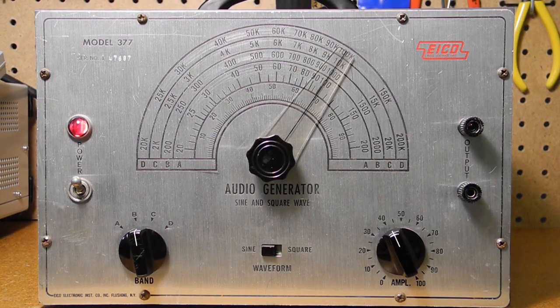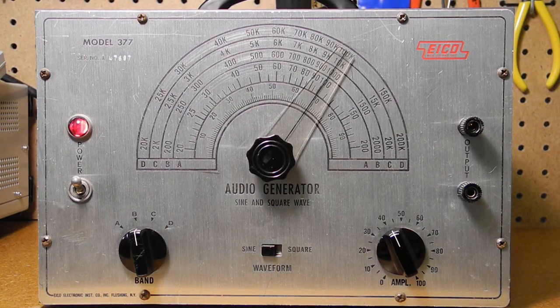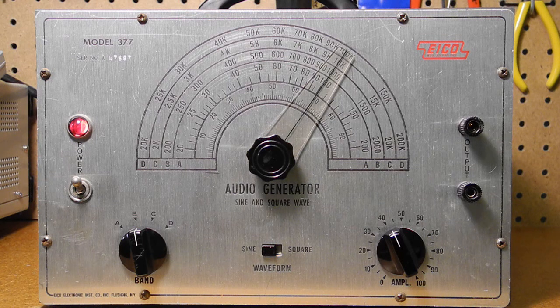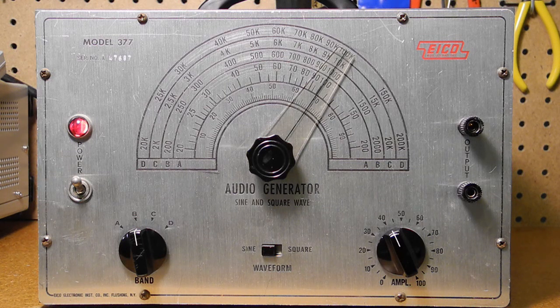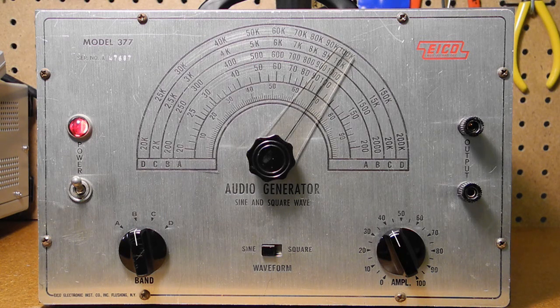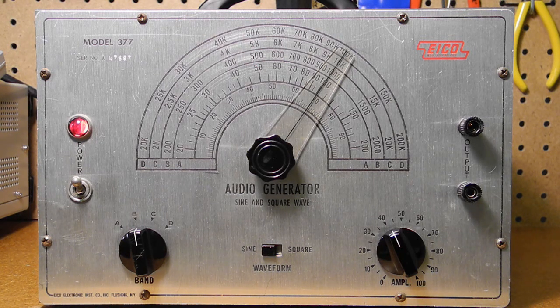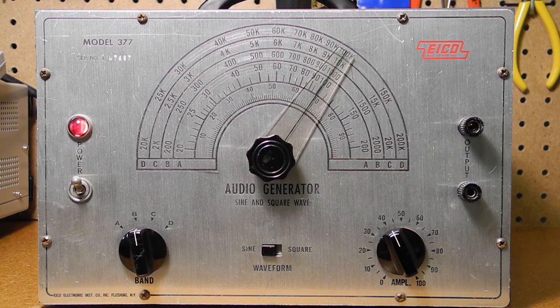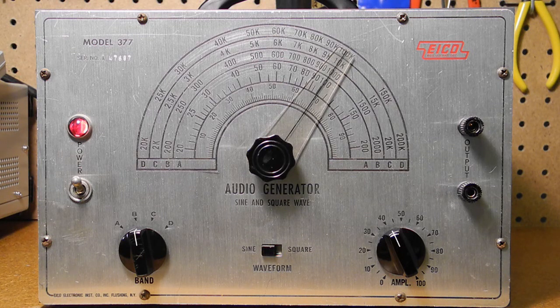The frequency calibration is reported as accurate to ±3%, and output level is constant within ±1 dB from 60 Hz to 150 kHz. Although it goes up to 200 kHz, the square wave output is only rated as within specifications up to 30 kHz. It weighs about 20 pounds and runs from AC power.